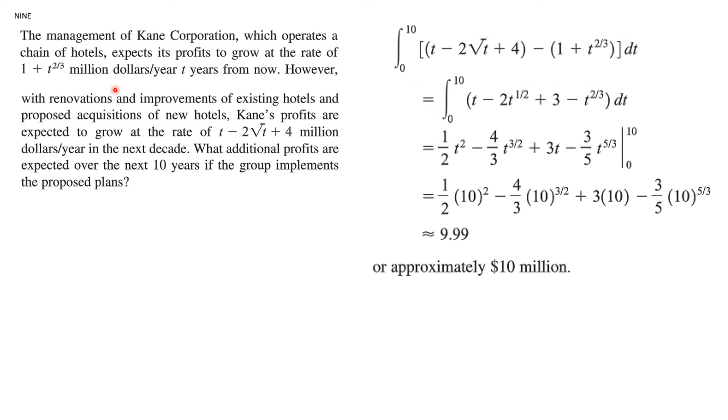Okay, here you have this company in a lot of words, but their profits are growing at a rate. Rate tells you that's the derivative, and those are in terms of million dollars per year. So what additional profits are expected over the next 10 years if they implement those plans. This is what happened before the plans. This is after the plans. So this is after the plans minus before the plans. We integrate from 0 to 10. We add 1 to the exponent, divide by the new exponent, quite a bit of calculation, evaluate at 10 and 0, and we get 9.99 or approximately 10 million dollars.